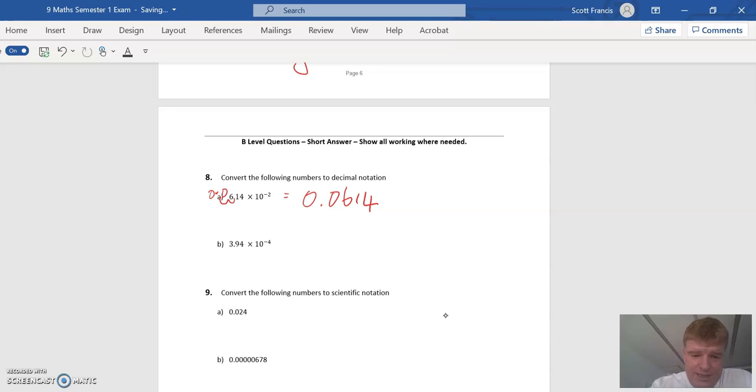The next one, we're going to move it four places. So let's put some zeros in front here. Move it 1, 2, 3, 4. So 0.000394.